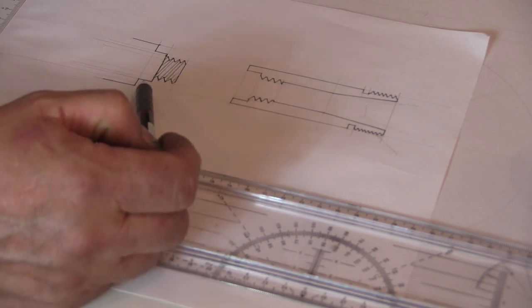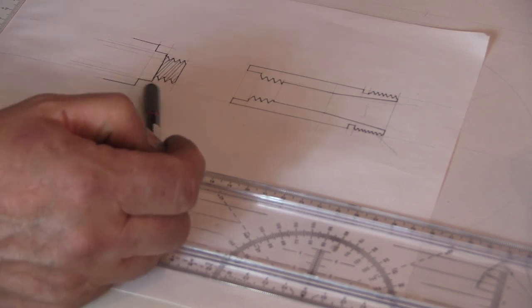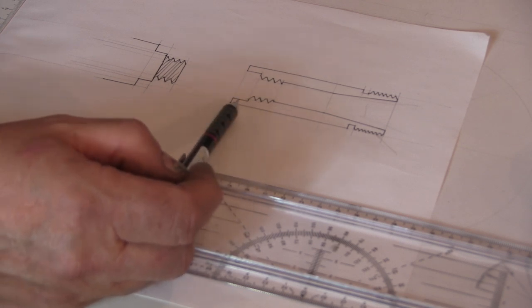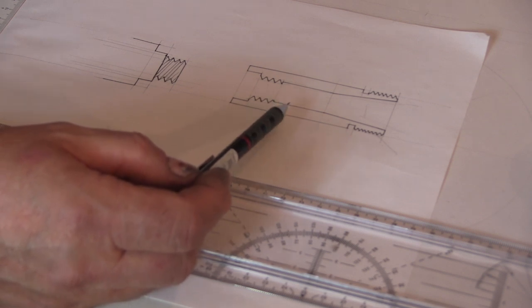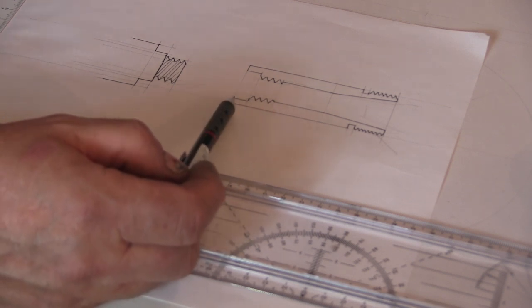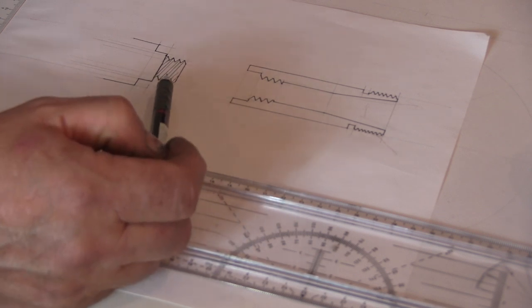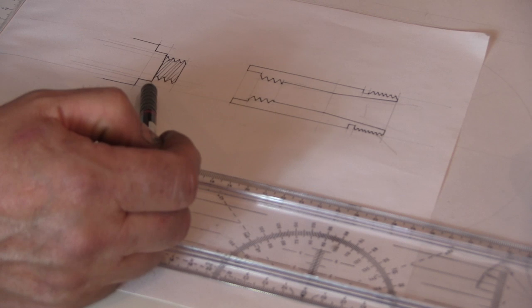The important bit is this register here on the lathe. Now that has to fit into this register here on the collet chuck, and it's the same if you're doing a lathe backplate or chuck backplate or anything. It's this register that actually will put the chuck or whatever you're putting on there back in a repeatable position.